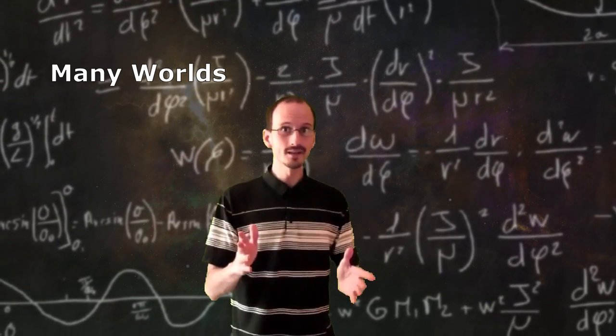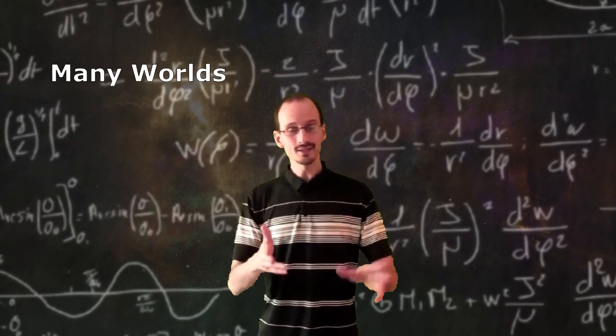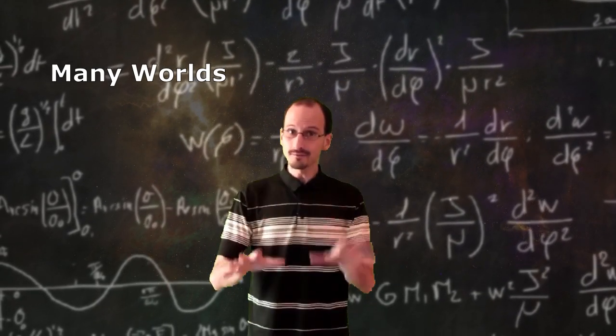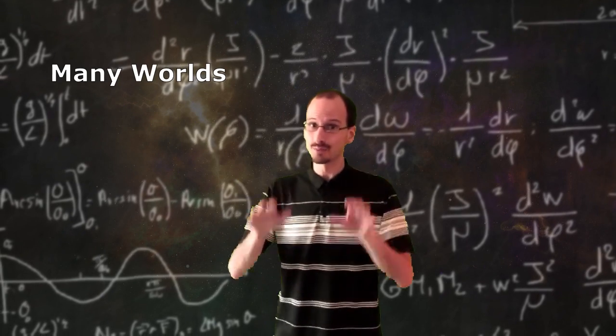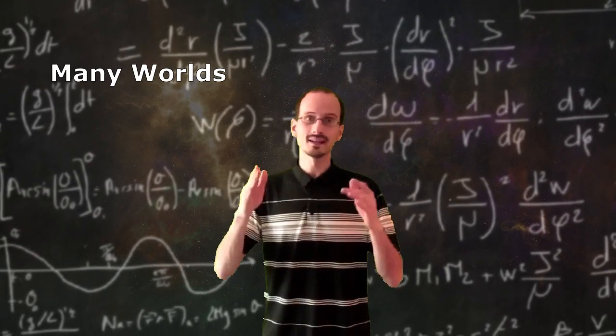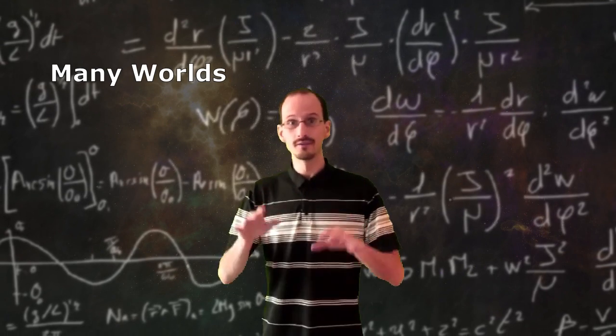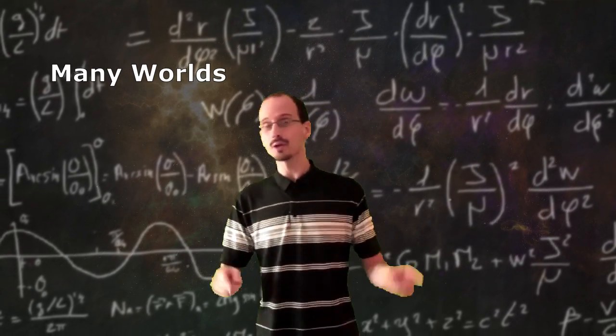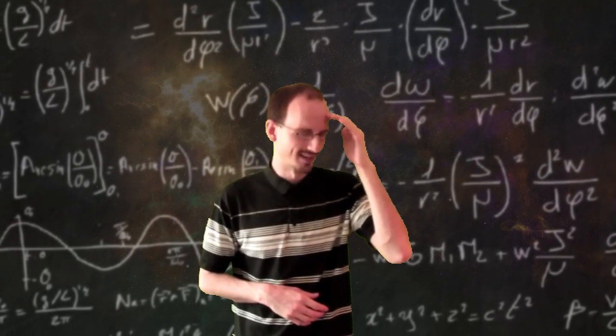Or maybe if there are an infinite number of universes, then every time the universe splits there are an infinite number of universes in each branch, and the probabilities are what we get when we take the limit of the ratio of the number of universes as that number goes to infinity. That one makes my head hurt.